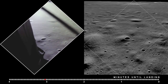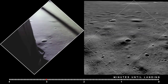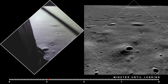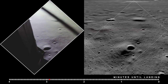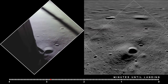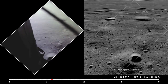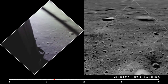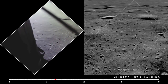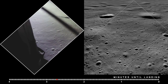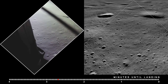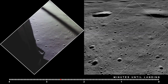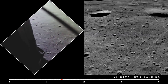Eagle looking great, you're go. Altitude 1,600. 1,400 feet, still looking very good. Roger, 12,02 — we copy it. 35 degrees. 35 degrees. 750. Coming down to 23. 700 feet, 21 down, 33 degrees.